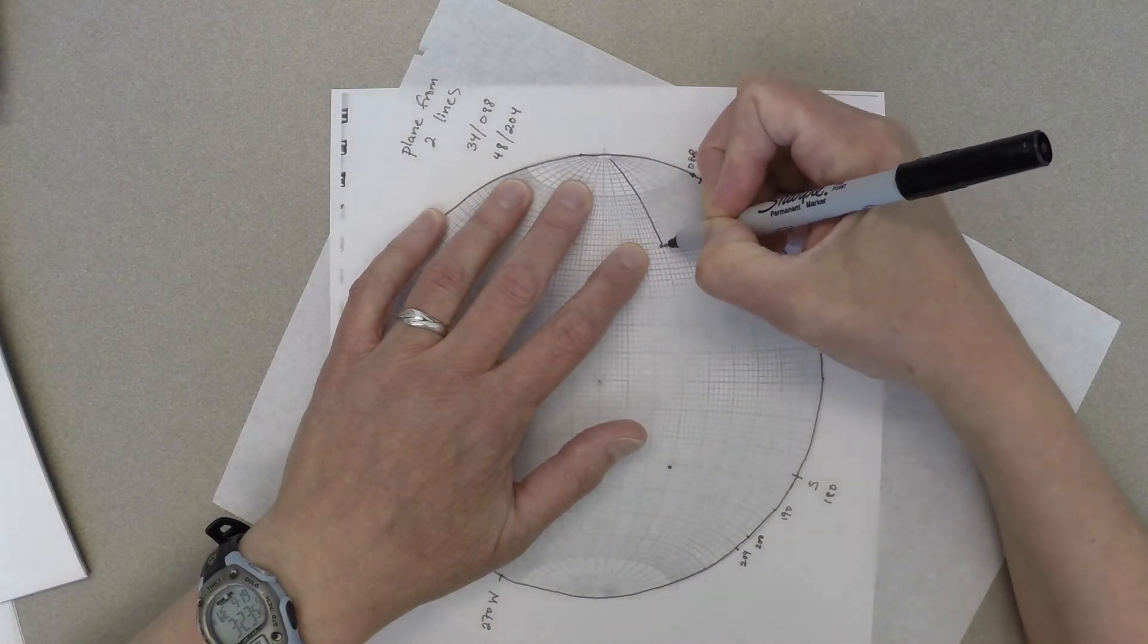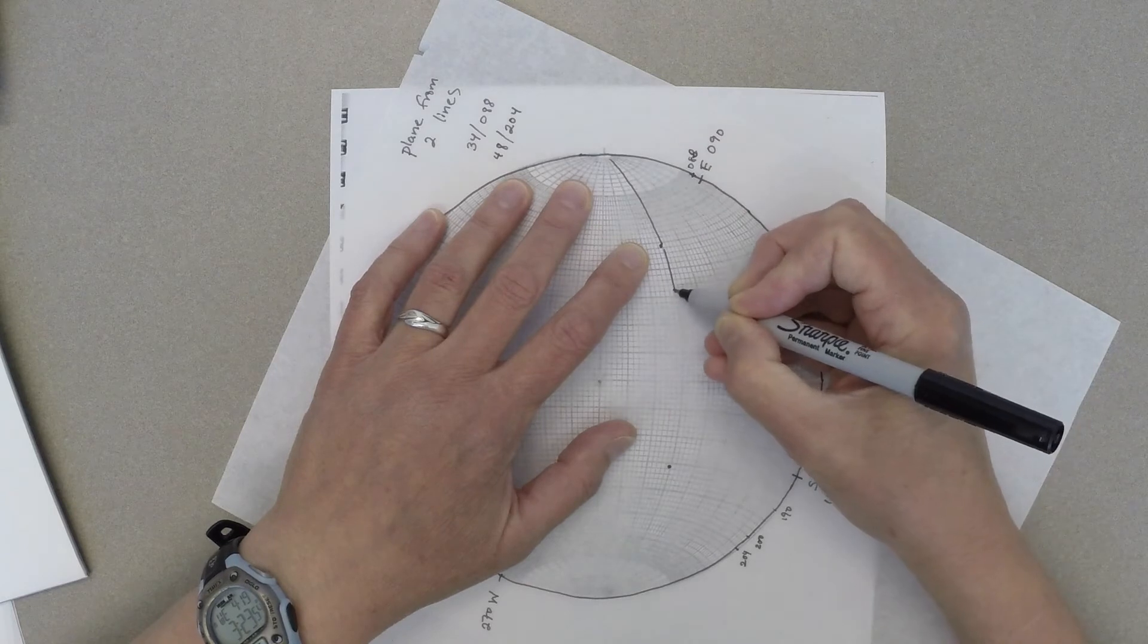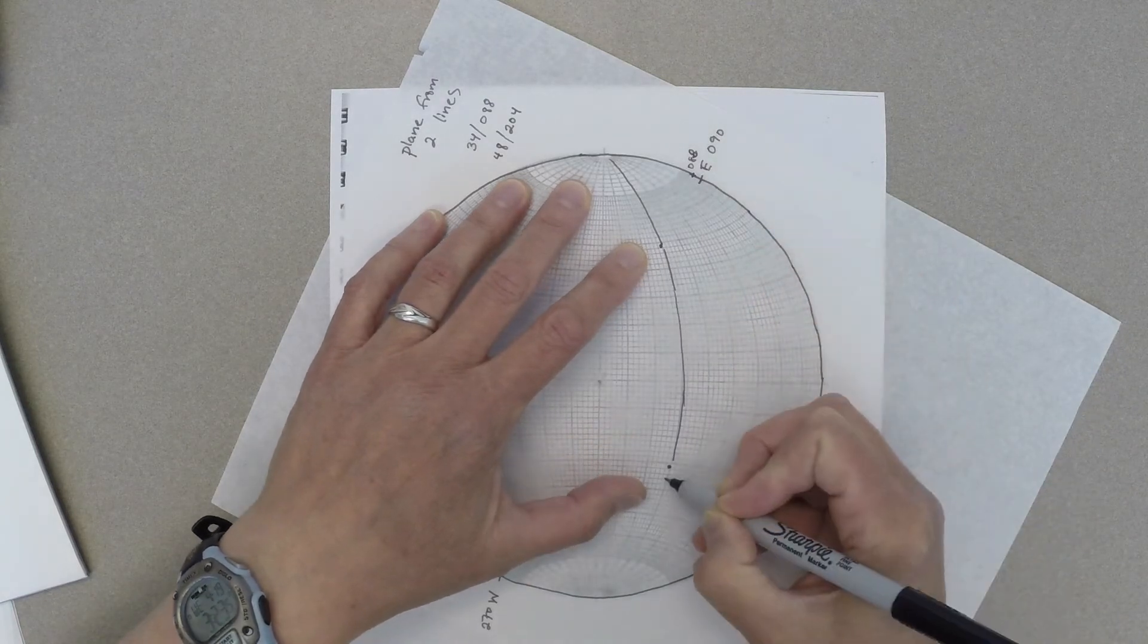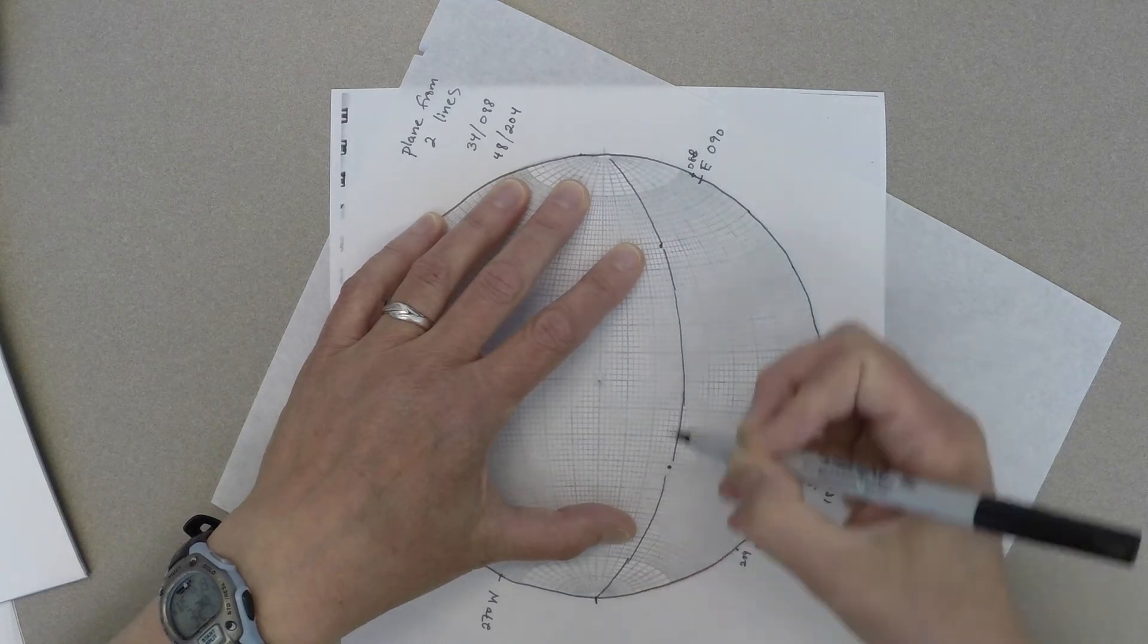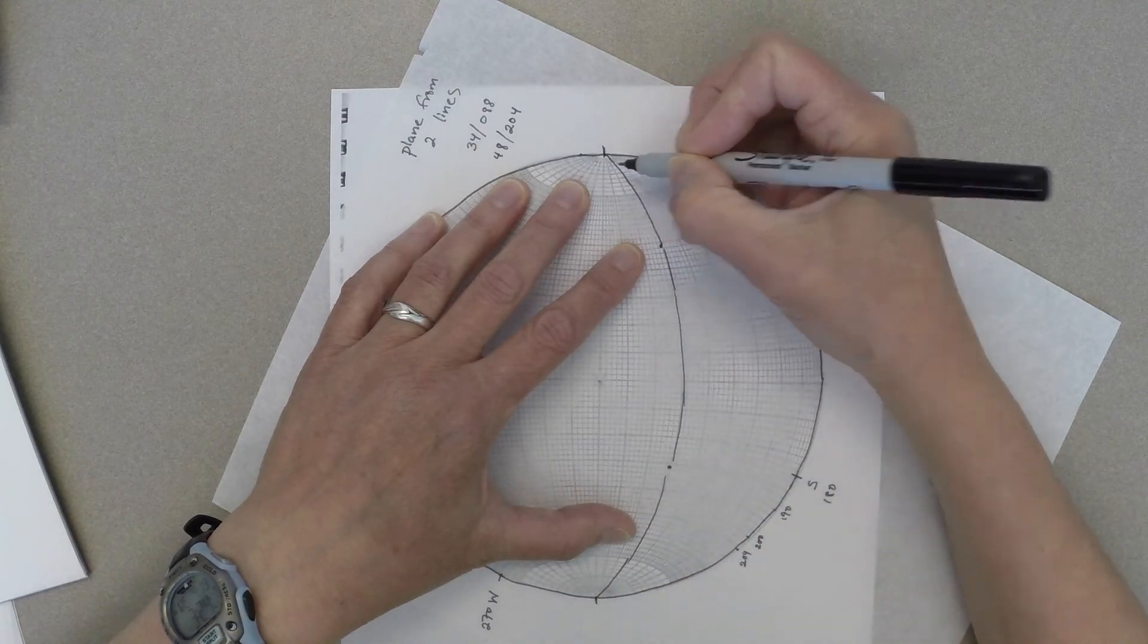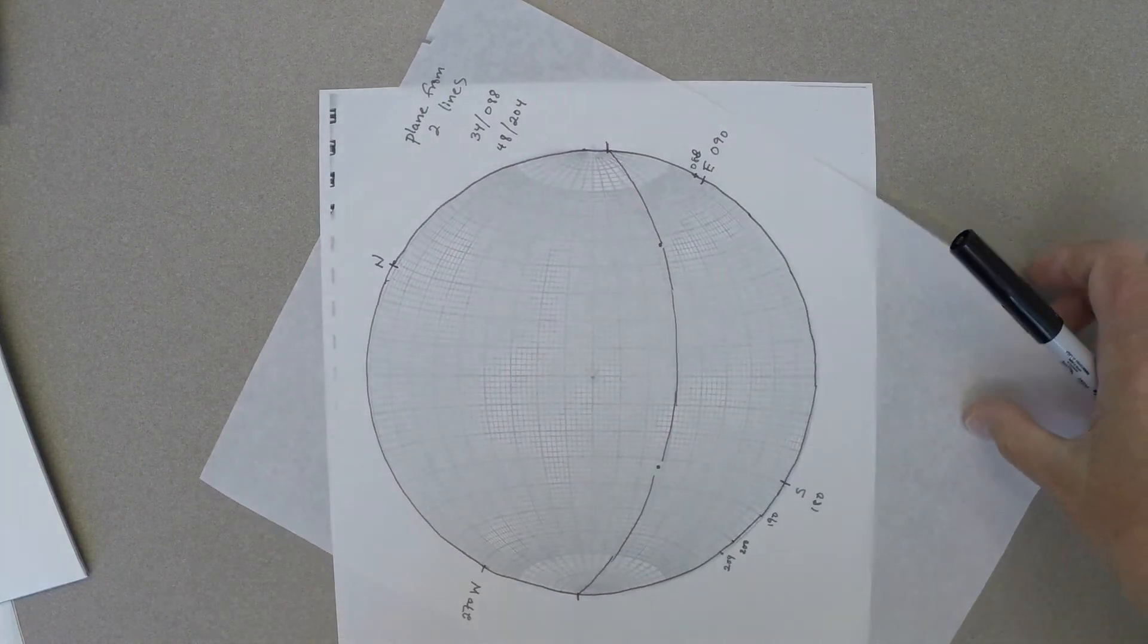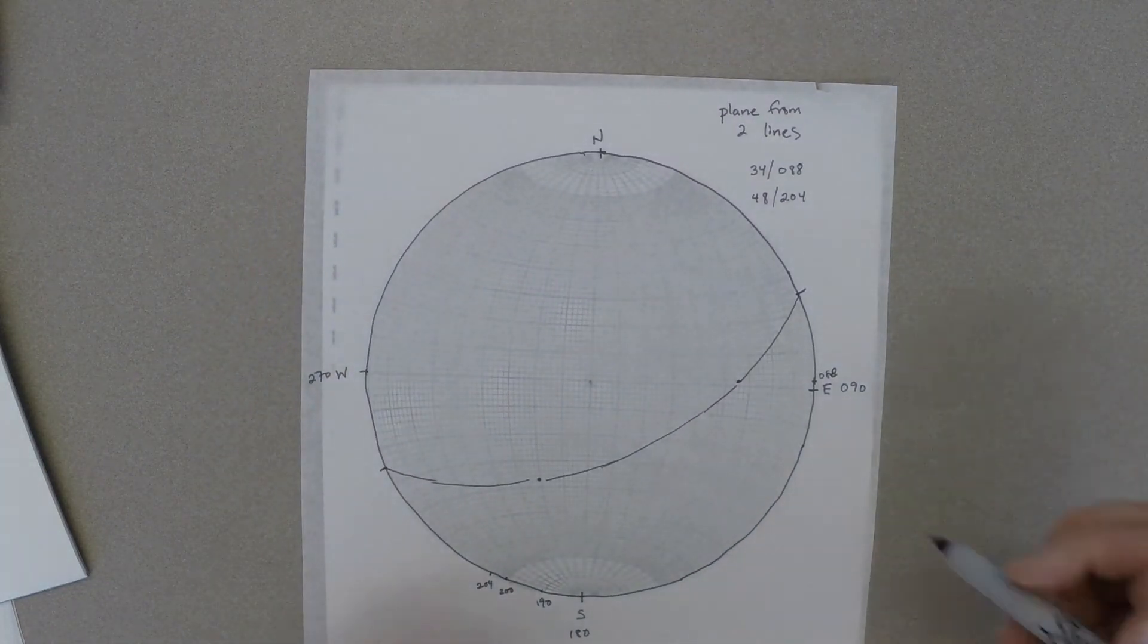Then we'll trace that great circle so that we'll be able to figure out its strike and dip. When you trace it, it becomes a little more clear that those two dots do fall on the same best-fit great circle, and making tick marks makes it easier to identify the strike.